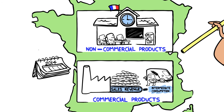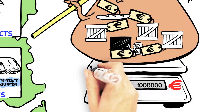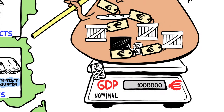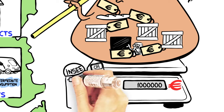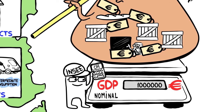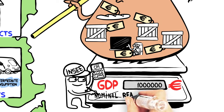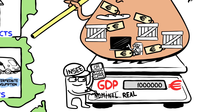To do this, we use the Consumer Price Index, CPI, measured by INSEE, the National Institute for Statistics and Economic Studies. We can then find the real GDP.